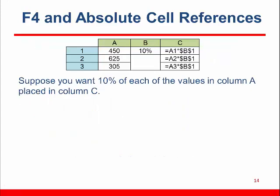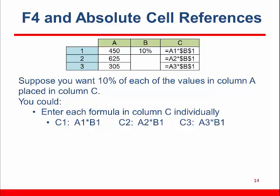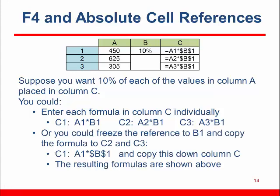In this slightly different example, we want to take 10% of each of the values in column A. We could enter the formulas one by one in column C, but there's an easier way. We can freeze the reference to the 10% in B1 and let the reference to A1 change with the destination location. To do this, use the F4 key. When entering the formula in C1, enter A1 asterisk B1 and press F4.